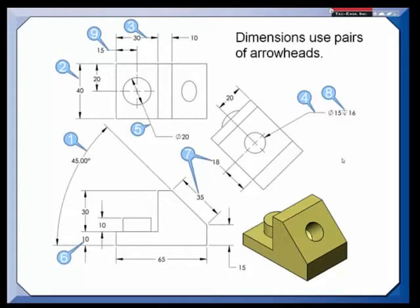So dimensions use the pairs of arrowheads, like we see here with the 30 or the 10, it's sharing. The 15 is a pair. Here the 40 has a pair, the 20 has a pair. And look at this.